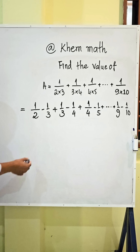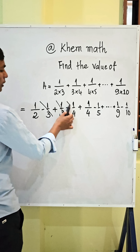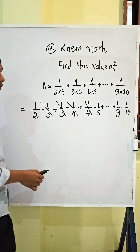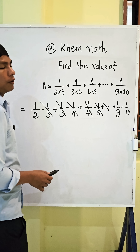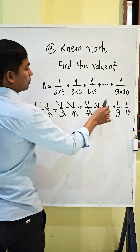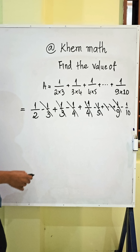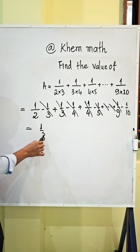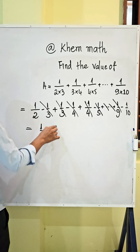So we cancel here: negative 1 divided 3 plus 1 divided 3, and here negative 1 divided 4 plus 1 divided 4, and here negative 1 divided 5 simplifies with 1 divided 5, and also 1 divided 9 simplifies. So we get this equal 1 divided 2, minus 1 divided 10.